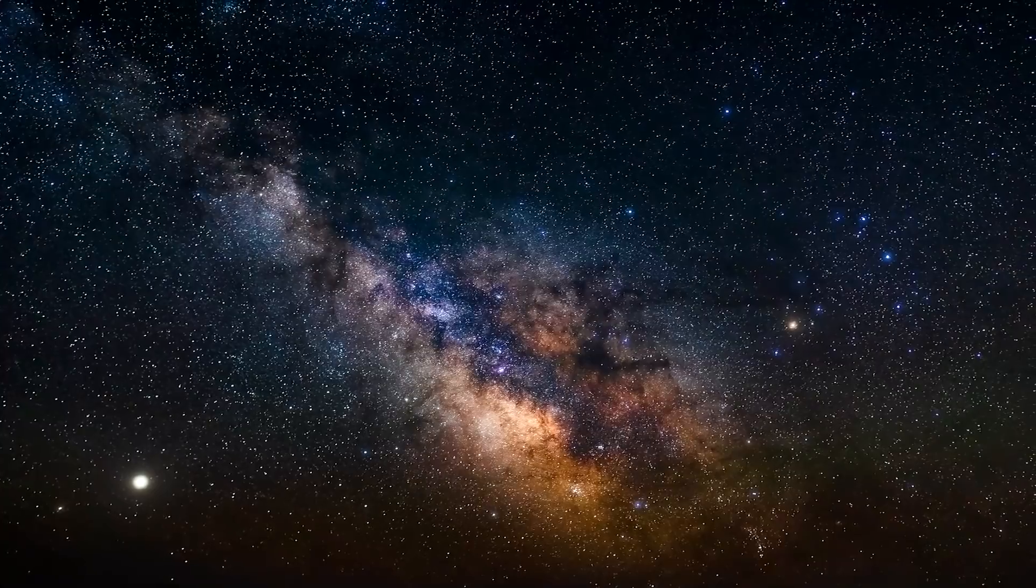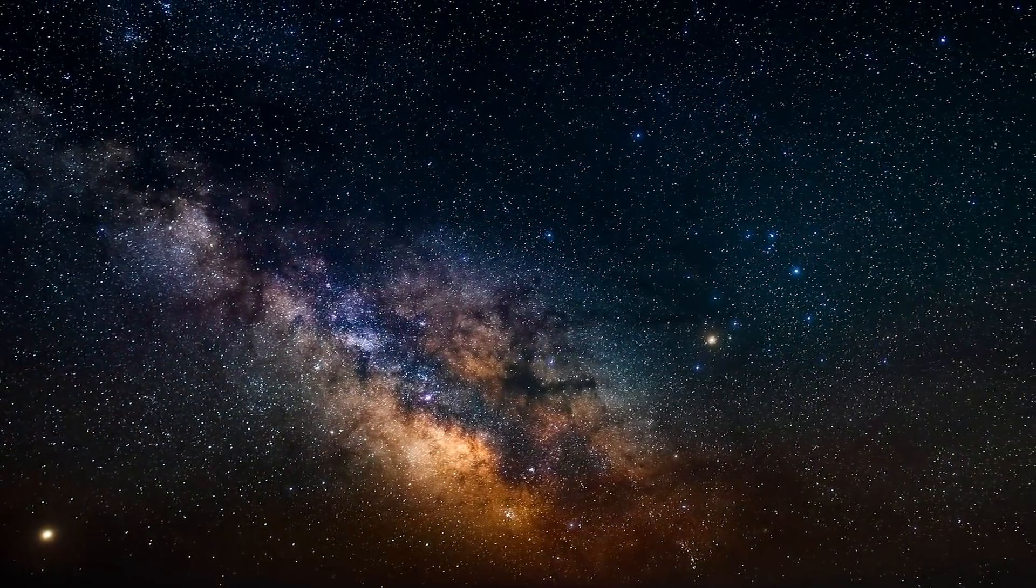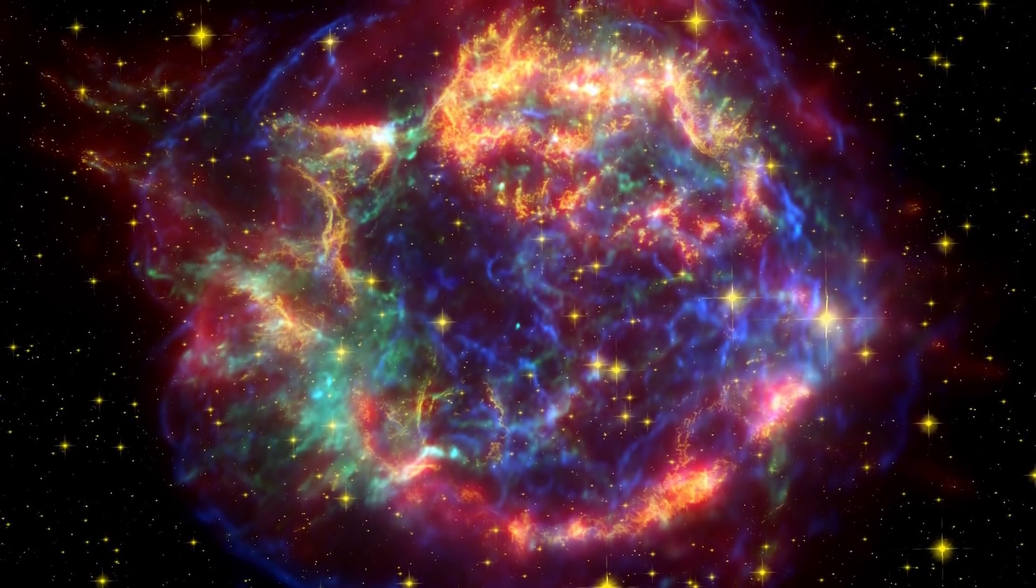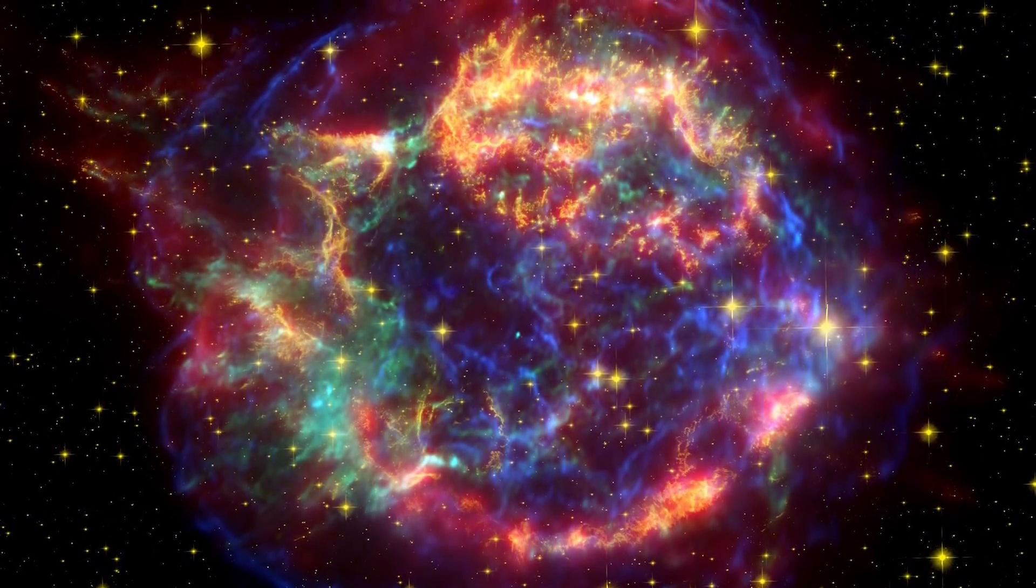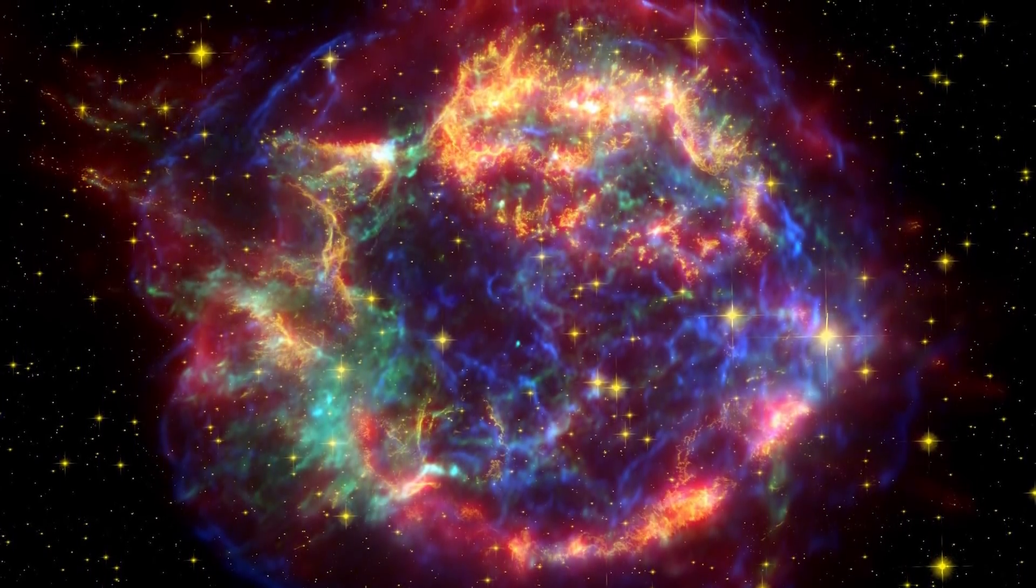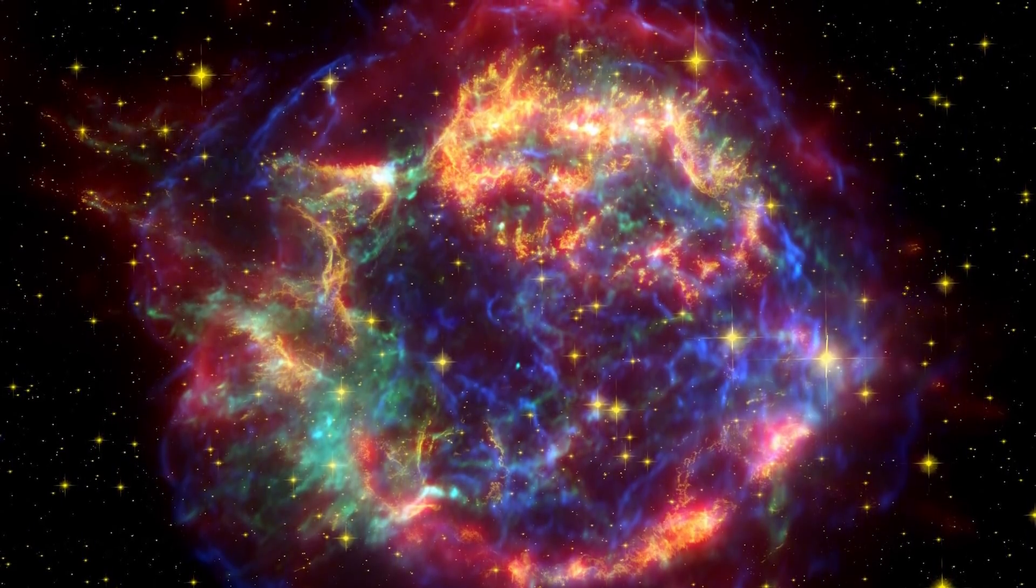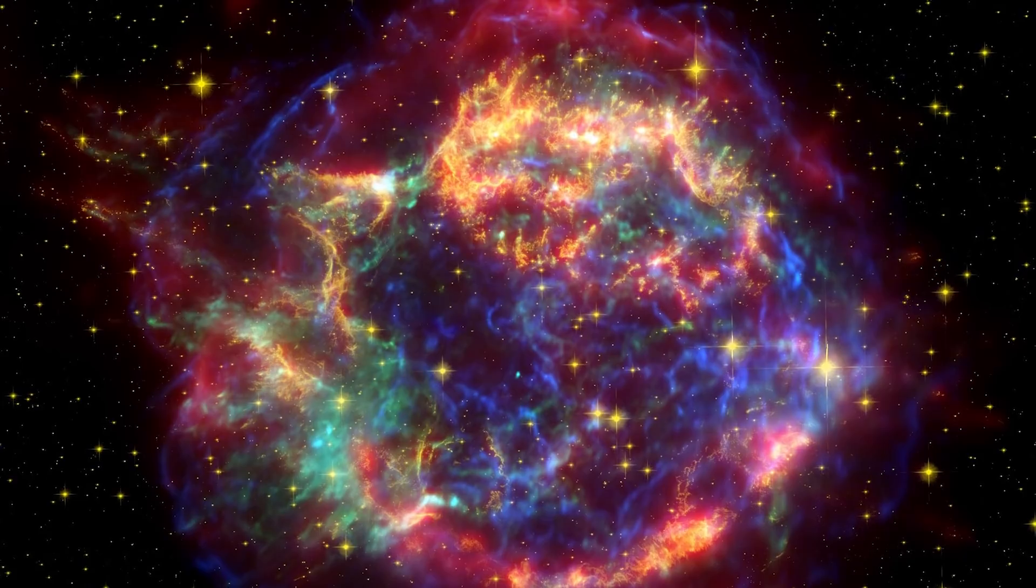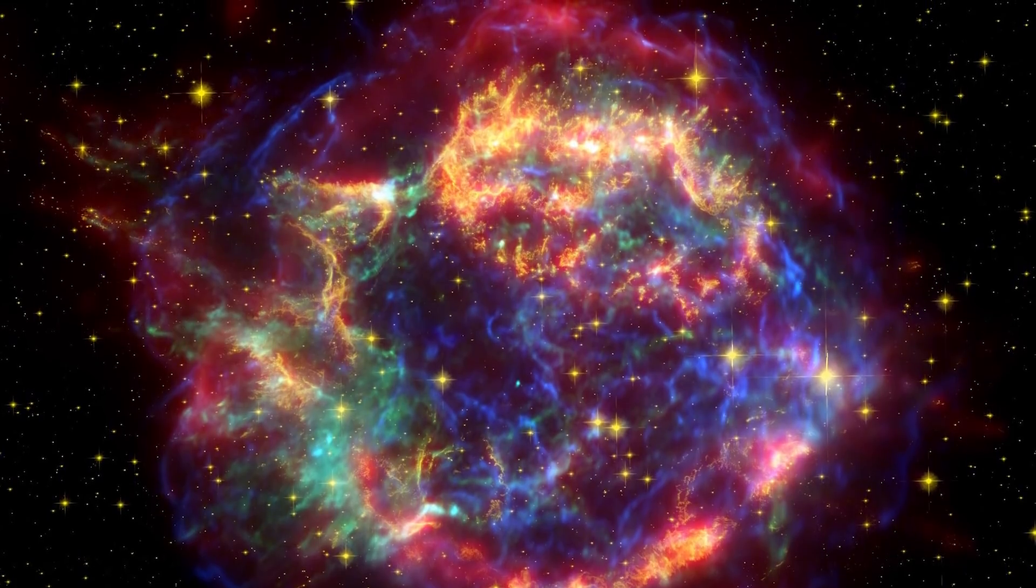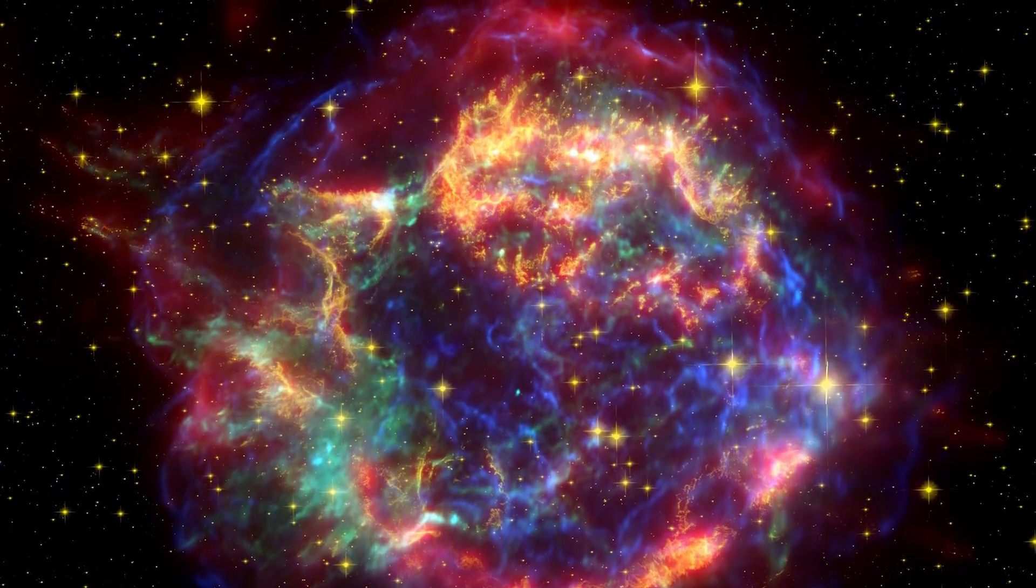The most recent known supernova to have occurred in our Milky Way galaxy is referred to as Cassiopeia A. It's estimated that the light from this supernova first became visible to Earth in the late 17th century. The supernova happened about 11,000 light years away from Earth, and the cloud of material that remains can be observed in the form of visible light from Earth with amateur telescopes and spans approximately 10 light years across space from our perspective.